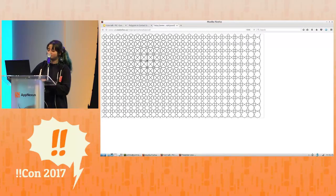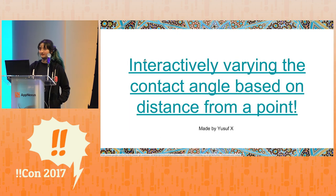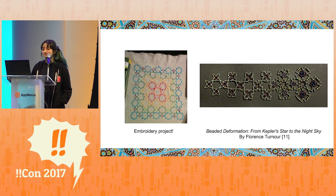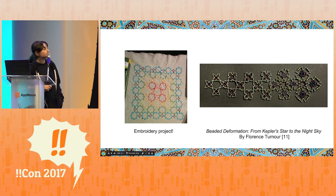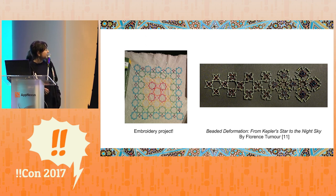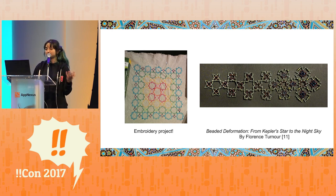This interactive demo was made by someone who only wants to be identified as Yusuf X. There are a lot of interesting physical art projects based on these ideas. Here's an embroidery project I made a few years ago — it's kind of wonky in the center but otherwise okay. On the right, there's a piece made by mathematician Florence Turner of a beaded Islamic parquet deformation called From Kepler's Star to the Night Sky.